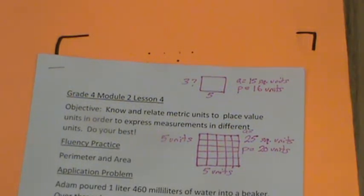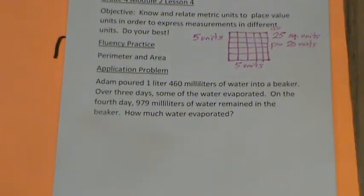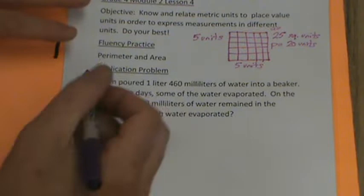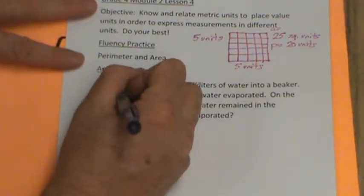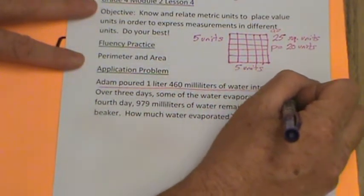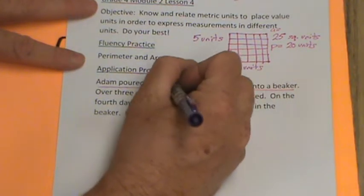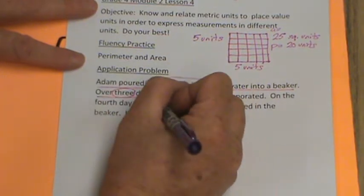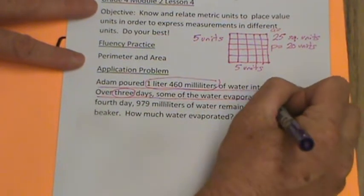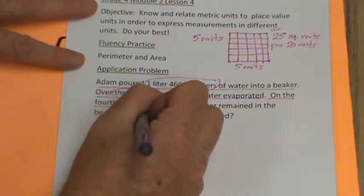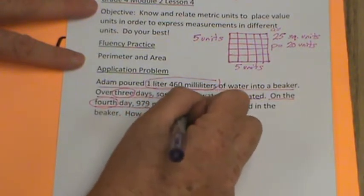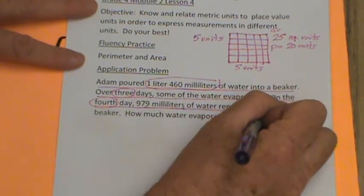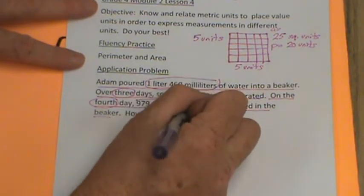We're going to shoot right down to our application problem. And let's figure out what's going on here. We're going to underline what we know, annotate, and squiggly line what we need to find out. So, Adam poured 1 liter, 460 milliliters of water into a beaker. Over 3 days, I'm going to circle the 3 just in case I need it, some of the water evaporated. On the 4th day, I'll circle 4th, 979 milliliters of water remained in the beaker.